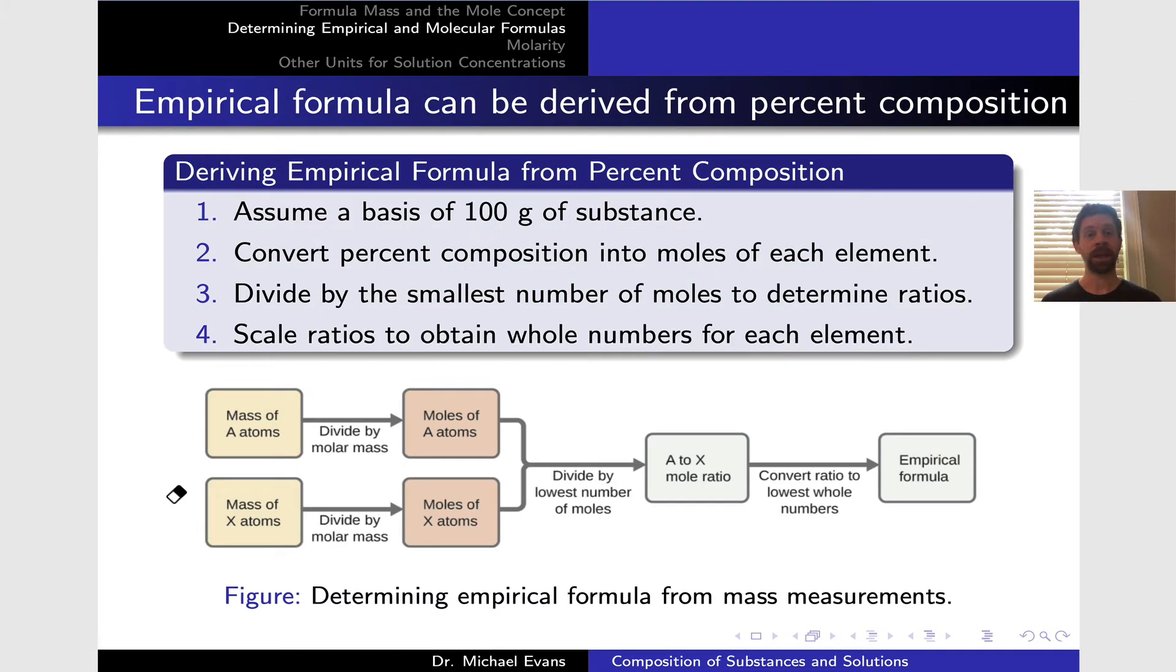We can elucidate or determine an empirical formula from percent composition. This slide shows the process step-by-step. If we're given percent composition by mass, one of the first things we can do is convert those abstract percentages into a concrete mass of substance. The most convenient mass to use is 100 grams, since percentages in a percent composition add up to 100 already. By assuming a basis of 100 grams, the total mass is 100 grams, which is convenient—we can throw away the percent sign and replace it with grams.